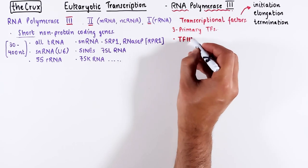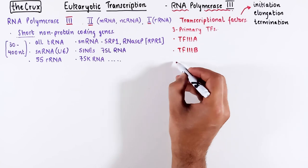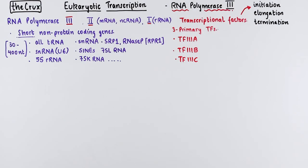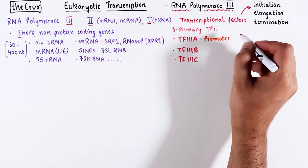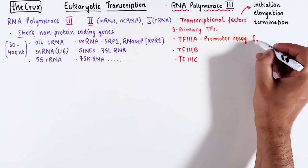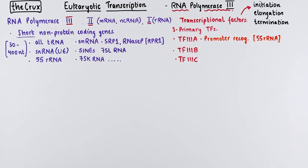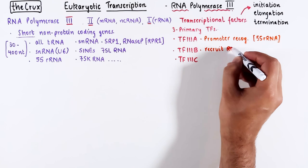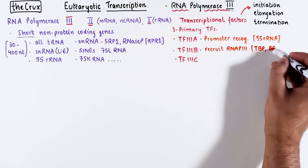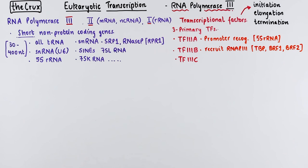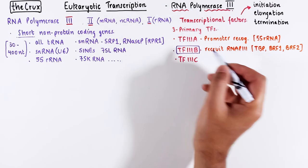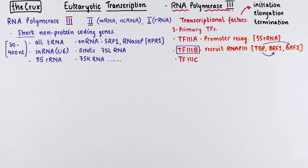RNA polymerase 3 relies on three main transcription factors. TF3A is crucial for recognizing the promoter of the 5S ribosomal RNA gene. The primary role of TF3B is to recruit RNA polymerase 3, and it comes in two fundamental forms, containing BRF1 and BRF2, and it changes depending on the context.